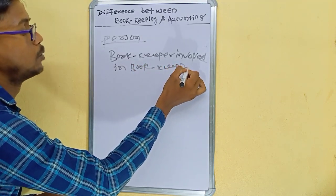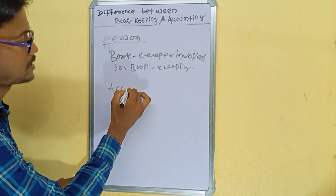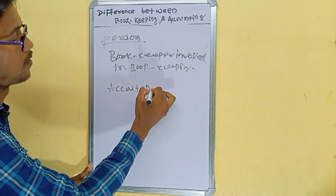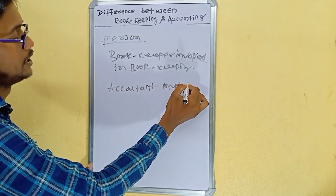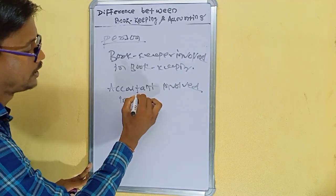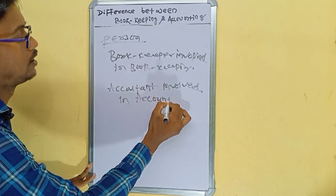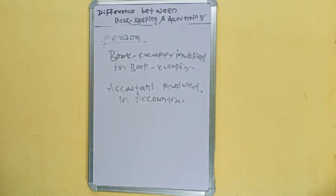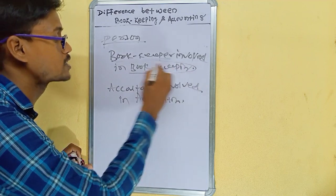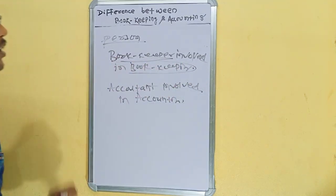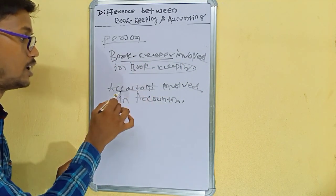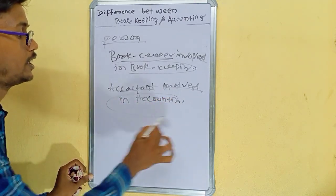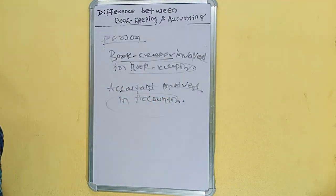The next term is person. A bookkeeper is a person who maintains the bookkeeping process. An accountant is a person who is involved in and maintains the accounting process.